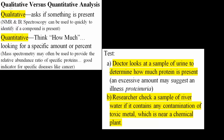In this video, we will go over qualitative versus quantitative analysis. Qualitative asks if something is present. NMR and IR spectroscopy can be used to quickly identify if a compound is present. With qualitative analysis, we're not asking for how much — we're just asking if something is present.